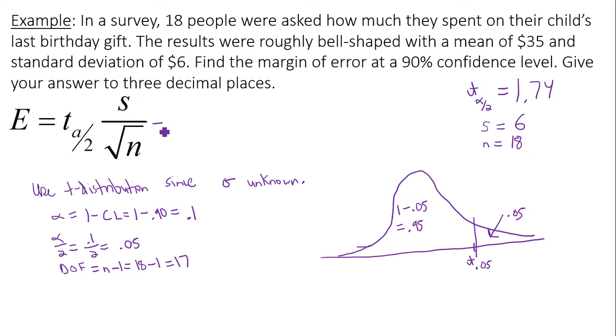Plug this into the error bound formula. You have 1.74 times 6 divided by the square root of 18. I recommend doing 6 divided by the square root of 18 first, keep it in your calculator and multiply by 1.74. When you do this, you will obtain an error bound or margin of error of 2.461. And that's how you calculate the error bound when making a confidence interval for a population mean.